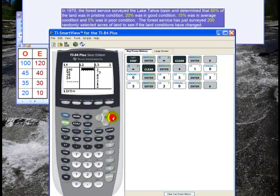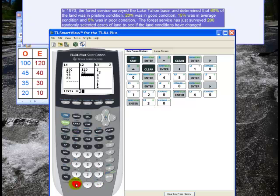For List 2, I put in the expected counts, which are 120, 40, 30, and 10.